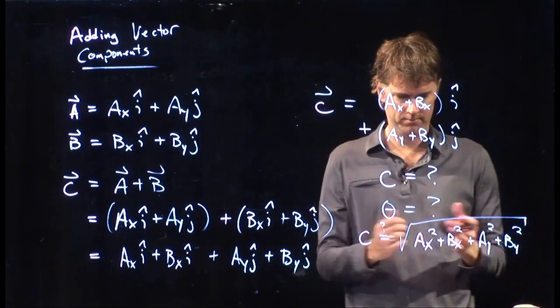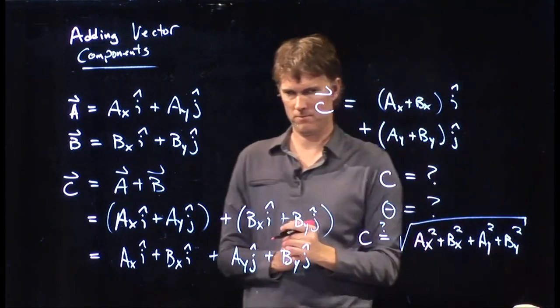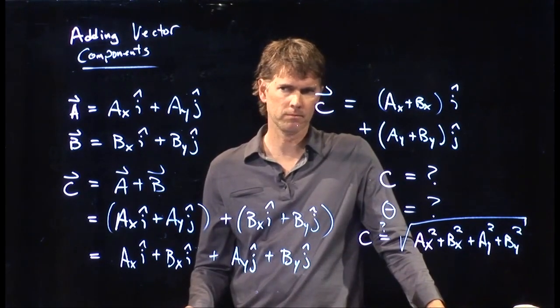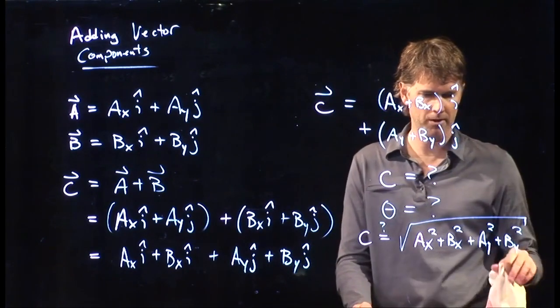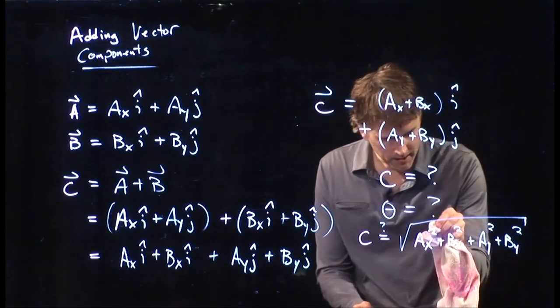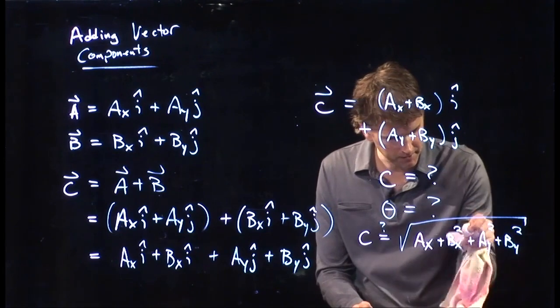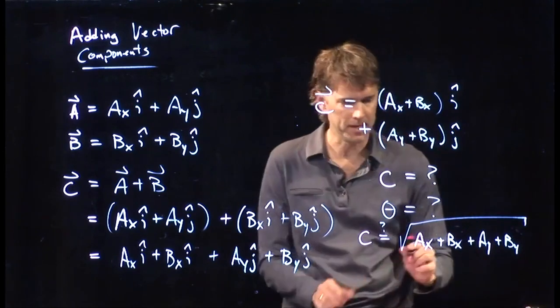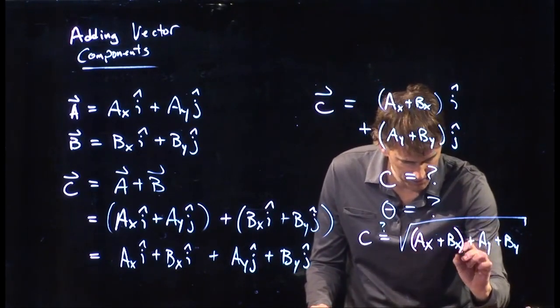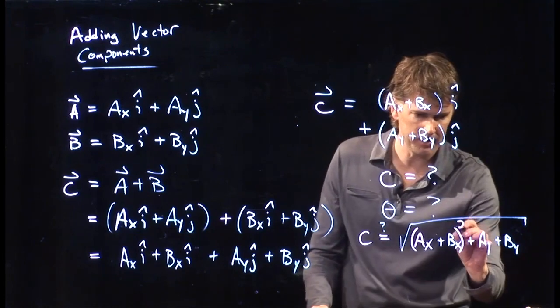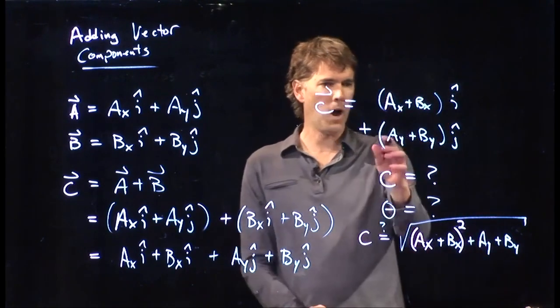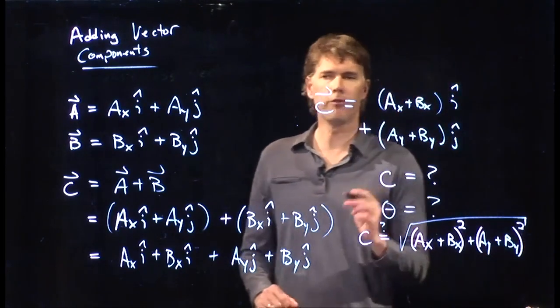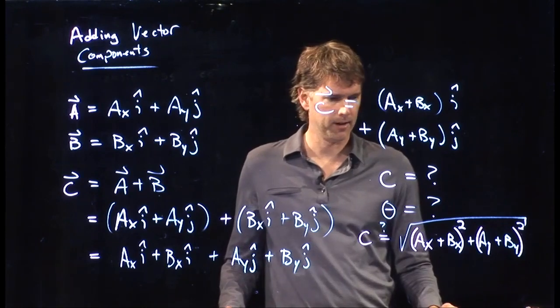Why is it the wrong answer? What have I done wrong? Yeah. What do you think? Add those components before you square them. Add them before we square them. Absolutely right. The x component for C is Ax plus Bx. So, I need to add those first and then square it. The y component for C is Ay plus By. I need to add those first and then square it.